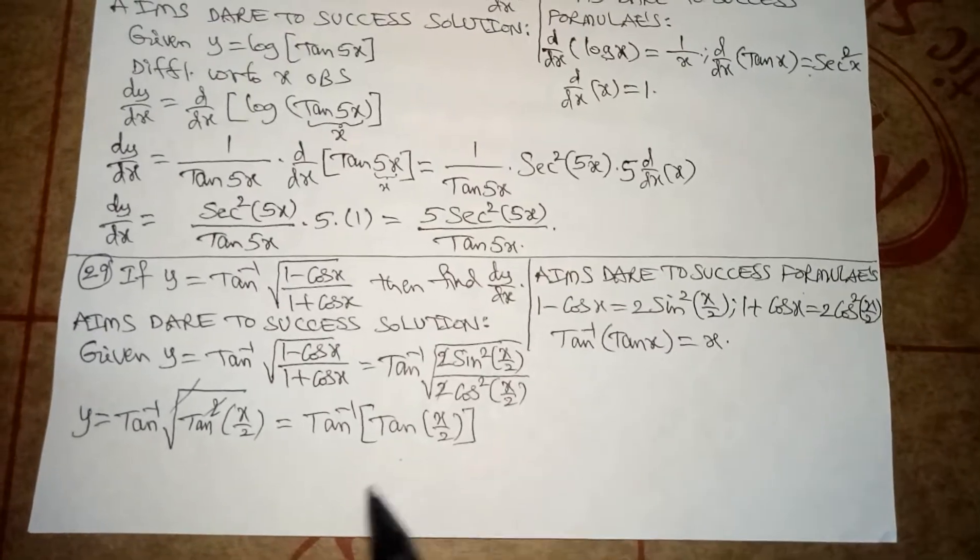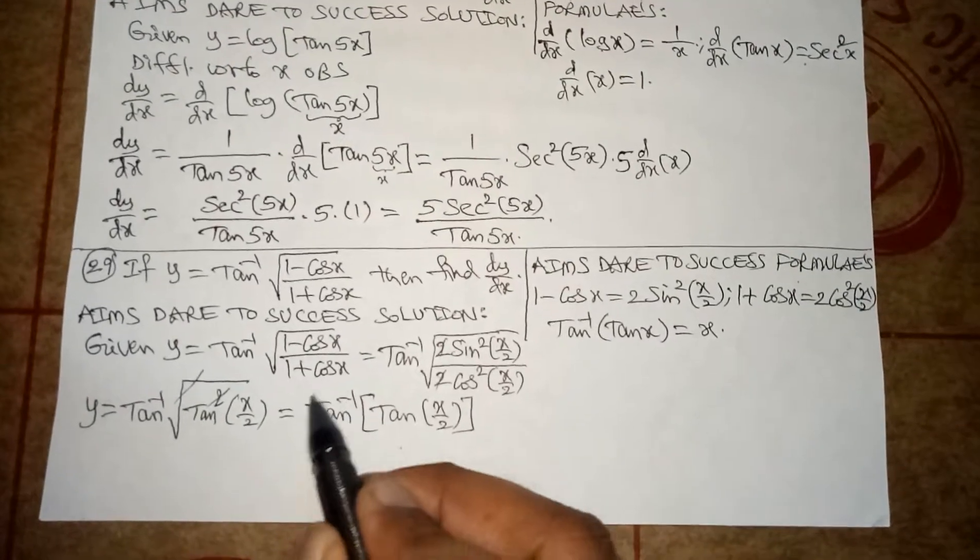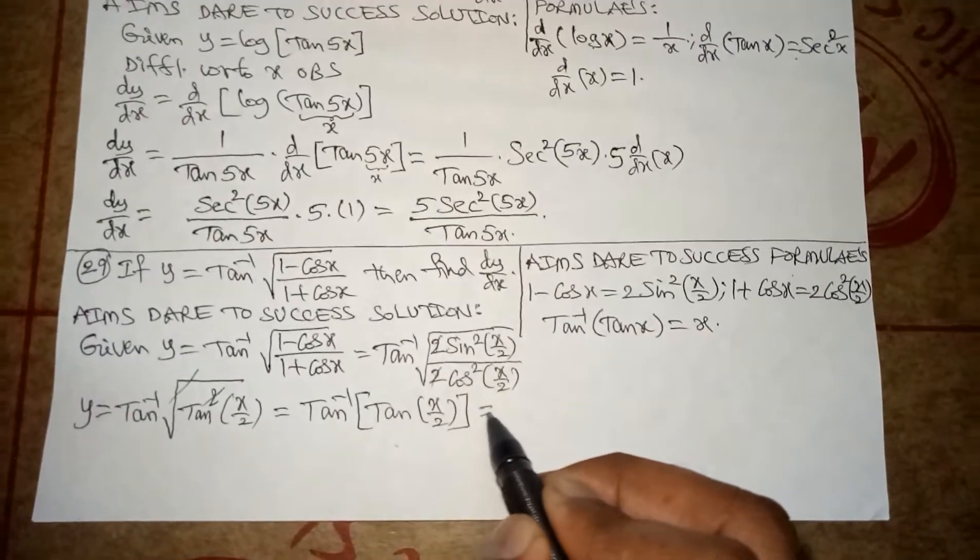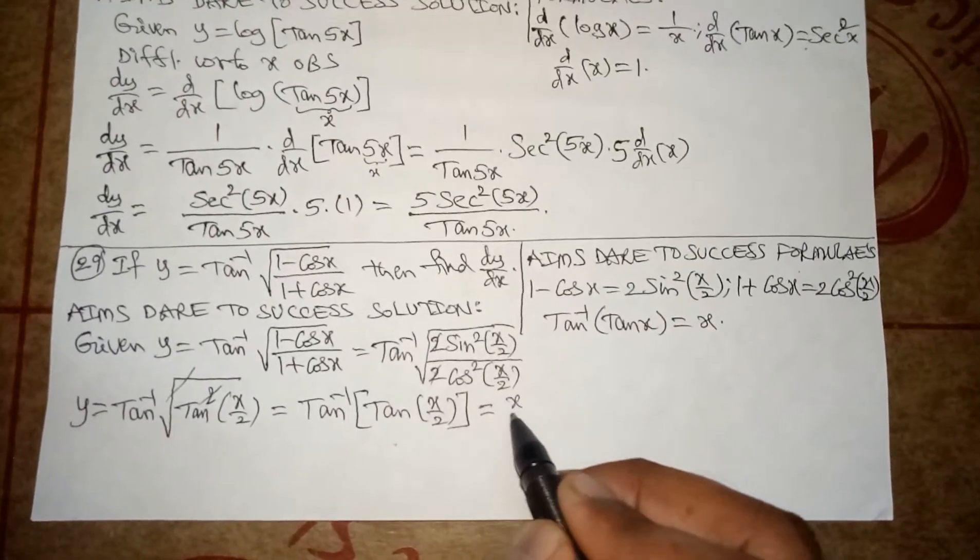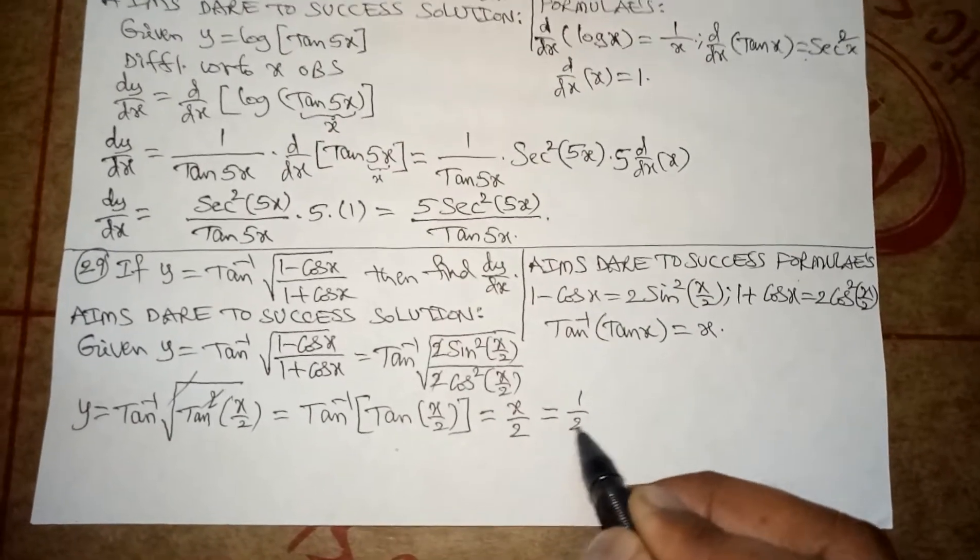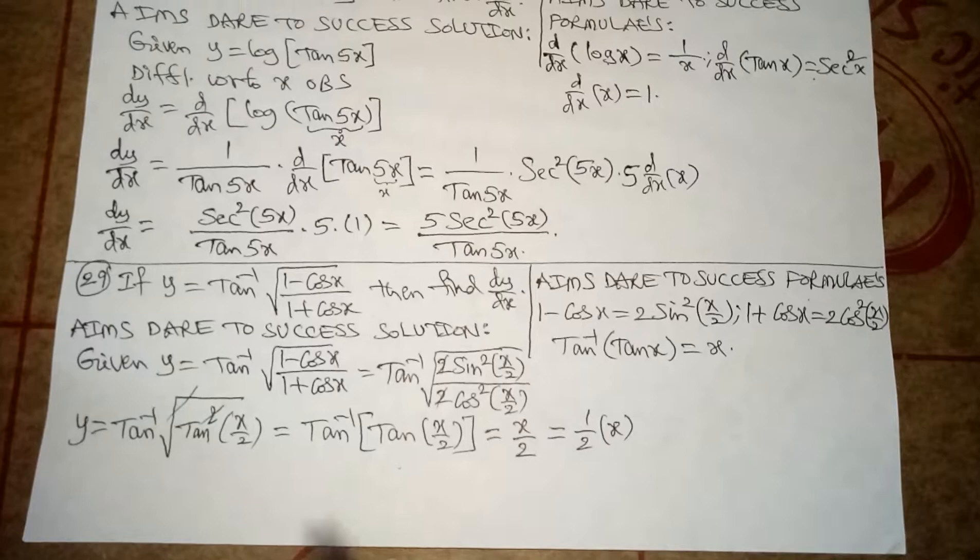Here we are having tan inverse of tan(x by 2). Tan inverse tan of (x by 2) is x by 2. This can be written as 1 by 2 into x.